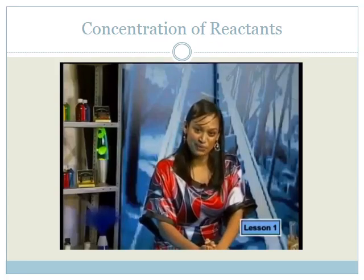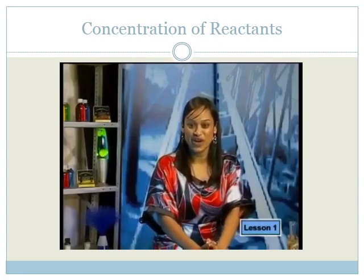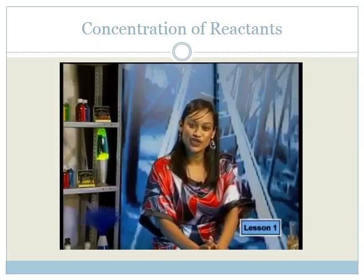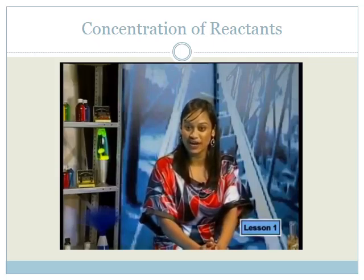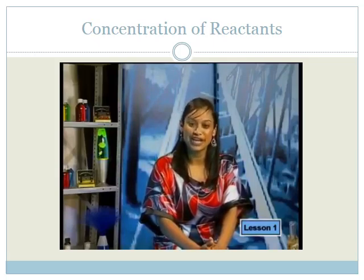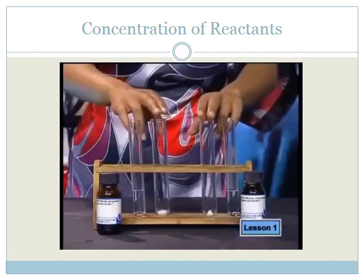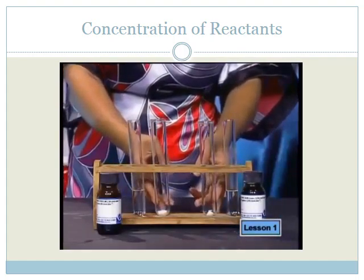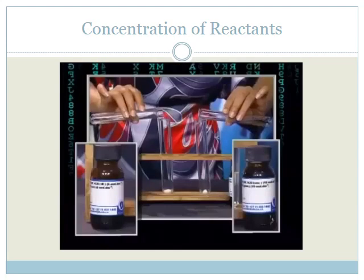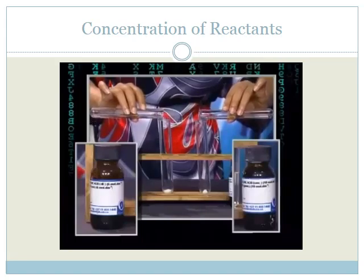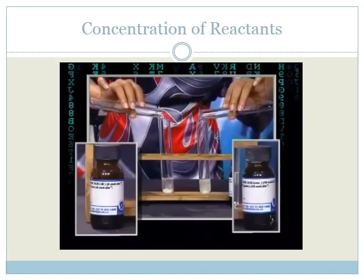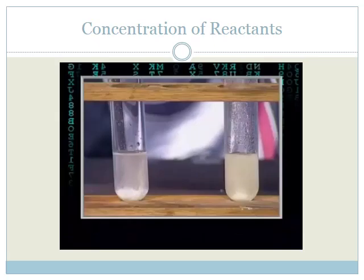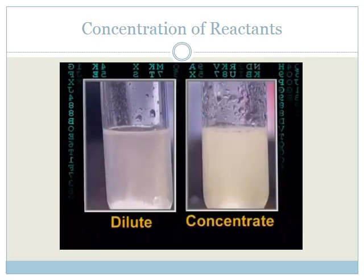For example, let's think of acid rain. Higher concentrations of acid in rain will erode marble statues faster. Here we can see the acid rain reaction on marble. Marble, or calcium carbonate, reacts faster with a higher concentration of acid. This means more carbon dioxide bubbles are released over the same time period.